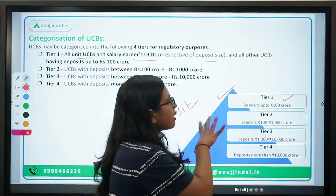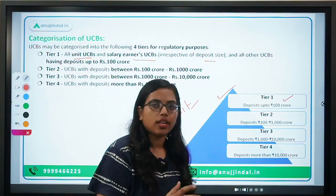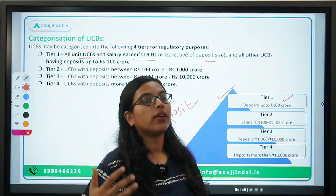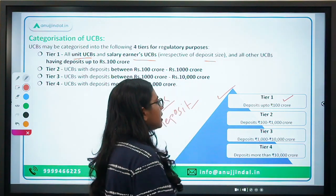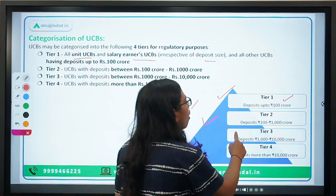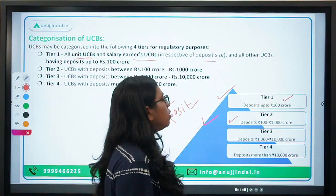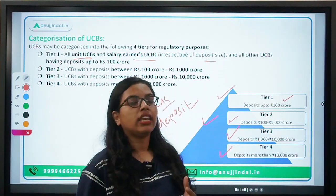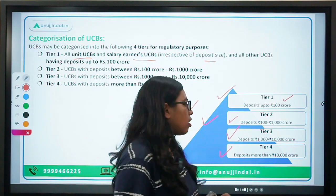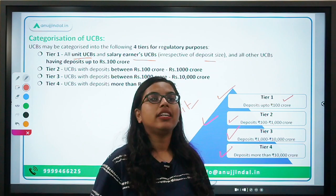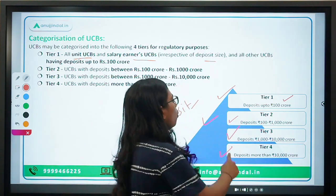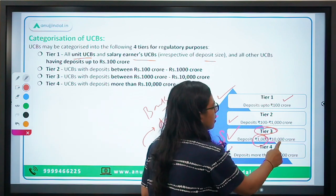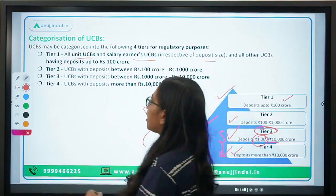Tier 2 UCBs consist of those having deposits from 100 to 1,000 crores; Tier 3 consists of deposits from 1,000 to 10,000 crores; and Tier 4 consists of deposits more than 10,000 crores. So if any urban cooperative bank has deposits of more than 10,000 crores, they will be categorized as Tier 4 UCB. The guidelines of the compliance function will be applicable to Tier 3 and Tier 4.